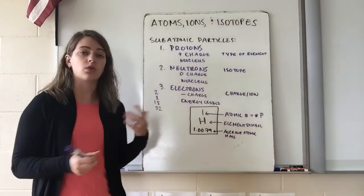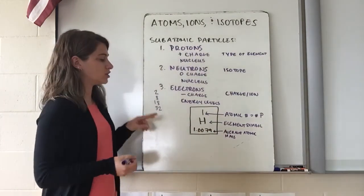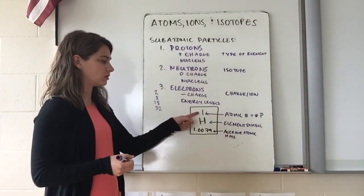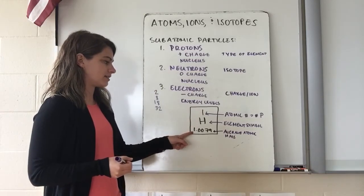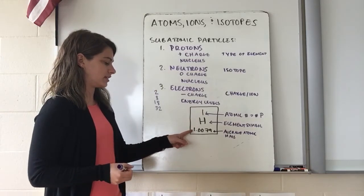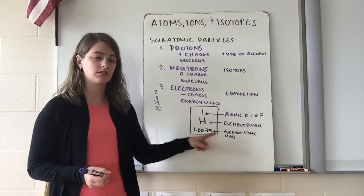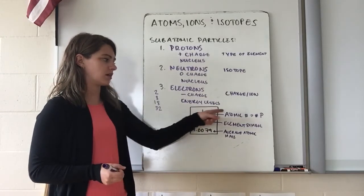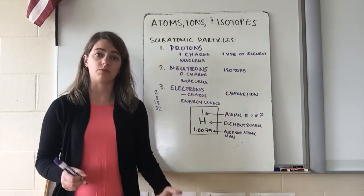Our last number at the bottom is our average atomic mass, and that number is normally going to be a decimal. So there are two numbers in the box: the whole number at the top is our atomic number, which tells us our number of protons, and the decimal number is the average atomic mass.